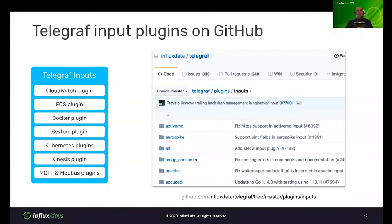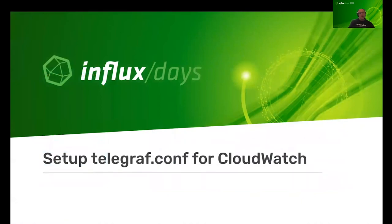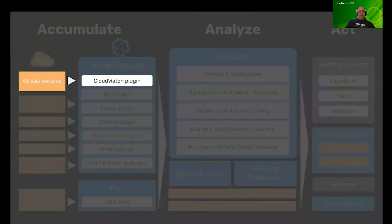Now let's dive into the Telegraf input plugins. All of these input plugins are on GitHub — go to github.com/influxdata/telegraf to find the various input plugins for CloudWatch, ECS, Docker, and more. This allows you to pull in data from 93 different AWS services. We're going to focus here on just a couple: EC2 and ELB, or Elastic Load Balancer.